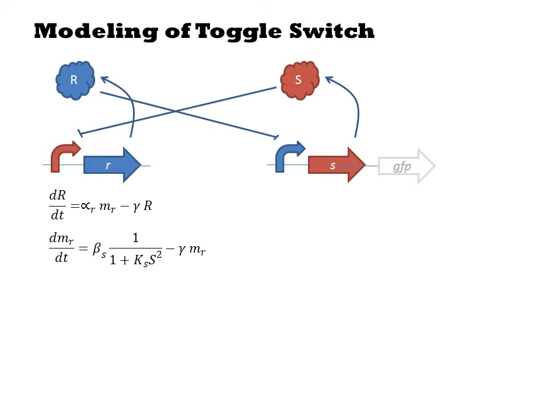It is customary to make an approximation that assumes that protein product is simply proportional to the mRNA concentration. And this is indeed true with a steady state assumption. Thus we can model R without mention of the mRNA as some rate constant beta S over 1 plus KS S squared minus gamma R.